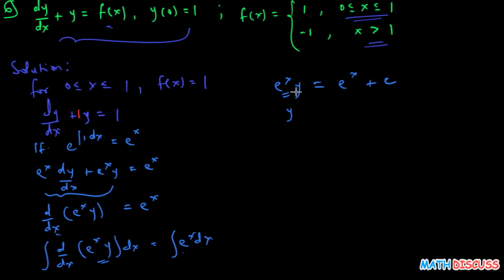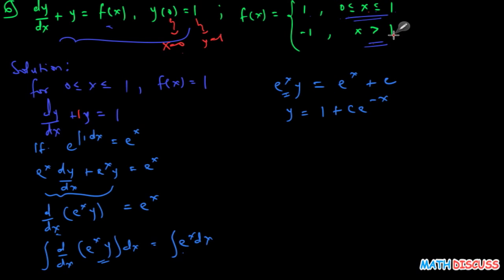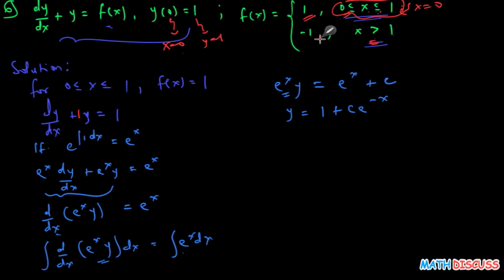Dividing both sides by e^x to find y, we get y = 1 + Ce^(-x). Now, the initial condition states y = 1 when x = 0. Since x = 0 belongs to the first interval 0 ≤ x ≤ 1, but not to x > 1, this initial condition can only be used for the first range. You cannot use it to find a particular solution for the second interval.